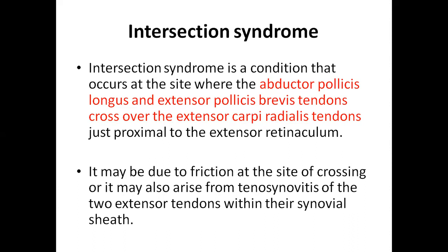The two muscles — the abductor pollicis longus and extensor pollicis brevis, which are the abductor and extensors of the thumb — cross over the extensor carpi radialis tendons, just proximal to the extensor retinaculum. This intersection syndrome may be due to friction at the crossing site, or it may arise from tenosynovitis of the two extensor tendons within the tendon sheath. Tendonitis is inflammation of the muscle tendon itself, while tenosynovitis is inflammation of the sheath covering the tendon.